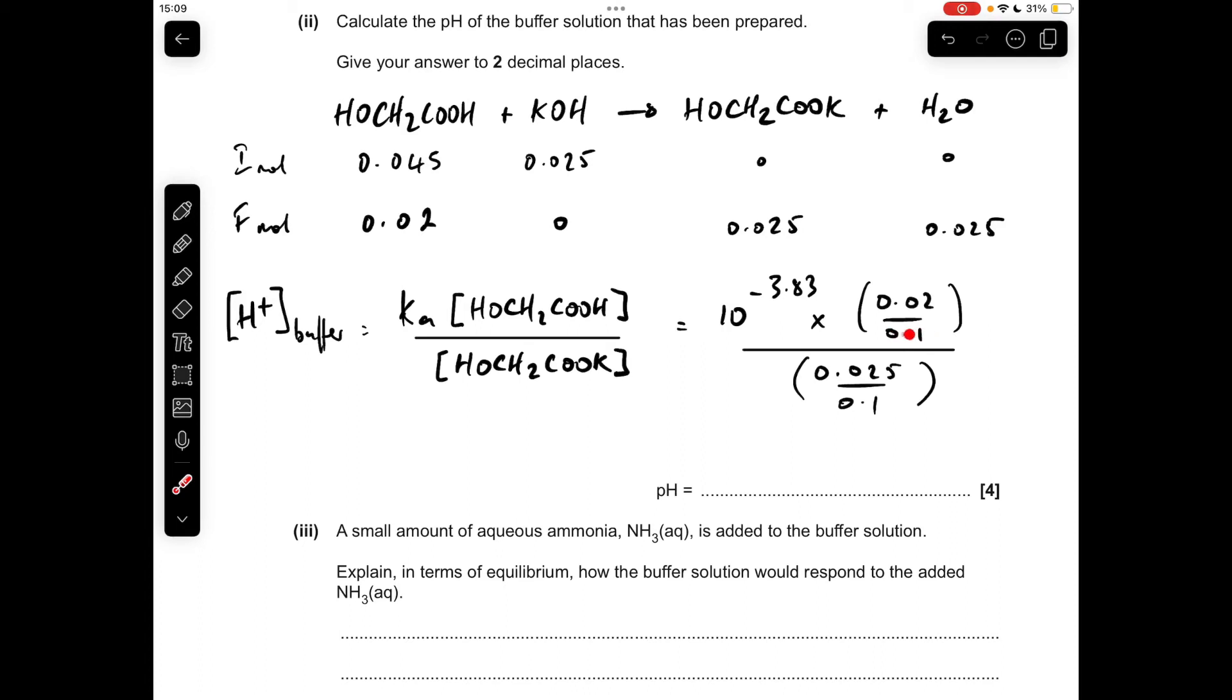Now technically, you don't need the 0.1s in there, but I like to put them in because effectively, this is concentration, so we should put concentration in there, but you don't have to. So the H-plus concentration of the buffer comes out at that, and all we need to do now is minus log and give our answer to two decimal places. So you should get 3.93.